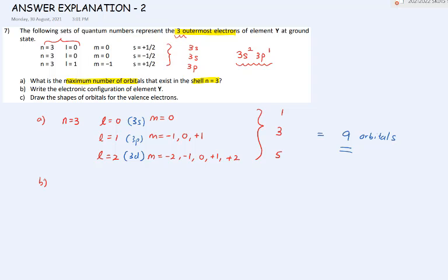For question 7b, write the electronic configurations of element Y. Since we know the outermost electrons go up to 3s2, 3p1, the full electronic configuration is: 1s2, 2s2, 2p6, 3s2, 3p1. The clue in the question is three electrons at the outermost shell, giving valence configuration 3s2, 3p1.